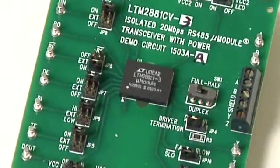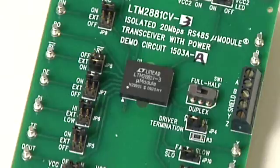Again, here's our new complete isolated power and transceiver solution, here shown on the demo board. Notice there are no required components around the part. The periphery components are simply jumpers and connectors for evaluating the operation of the part.